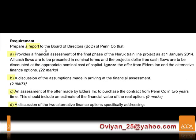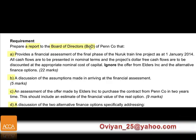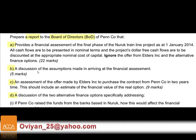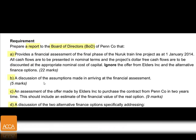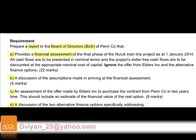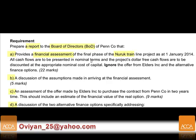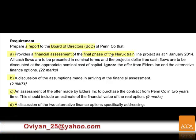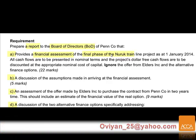Going up to required part a — this report is addressed to the board of directors. If no name is mentioned, call yourself Finance Manager. It asks for a financial assessment, which at this level is usually an NPV — specifically an NPV of the final phase of the neural train line.